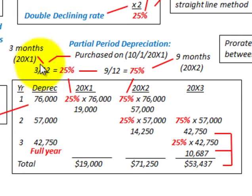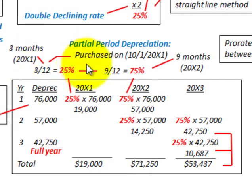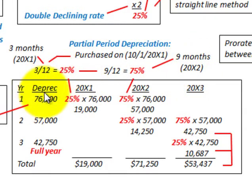For the first year, 20x1, we have October, November, and December — that's 3 months divided by 12 months, giving us 25% allocated to 20x1. The remaining 9 months, or 9/12, equals 75%, and that's what we recognize in 20x2. I've laid this out in table form to make it easy to follow.